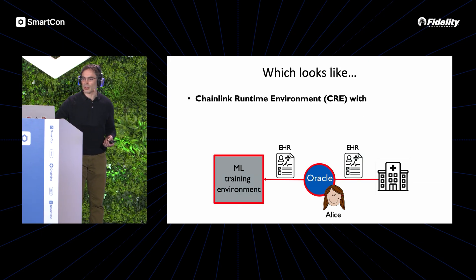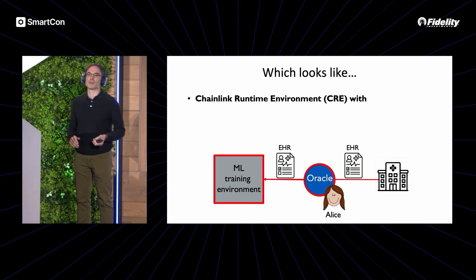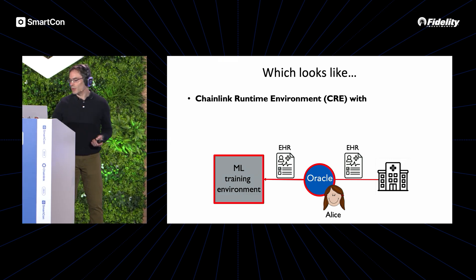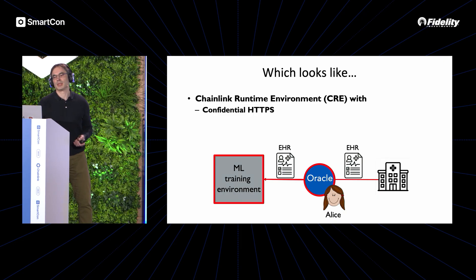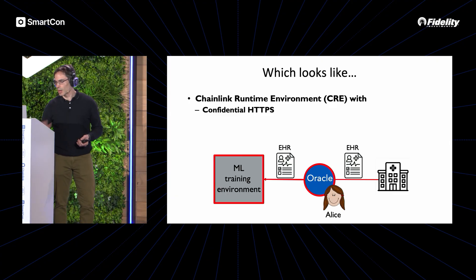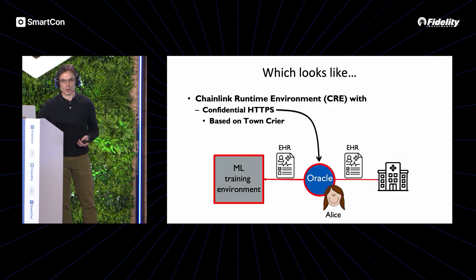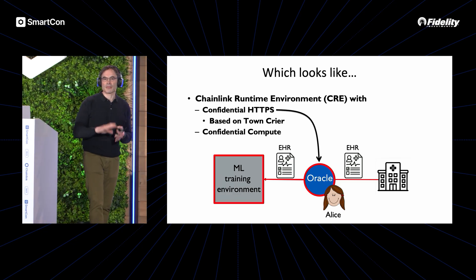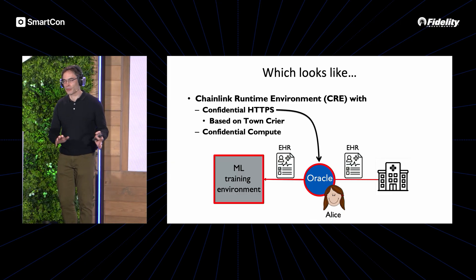This setup looks a lot like the Chainlink Runtime Environment — the CRE — with two features involved: Confidential HTTPS to source Alice's data from unmodified web servers, based on Town Crier or Deco as Sergey mentioned yesterday, and Confidential Compute, a protected environment to do the model training or fine-tuning.